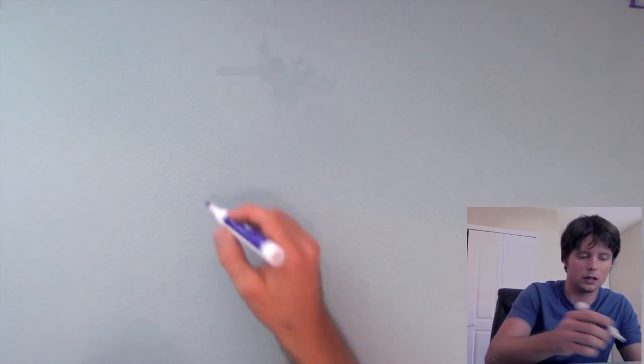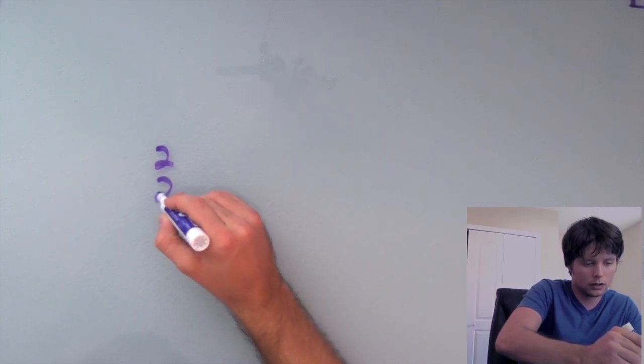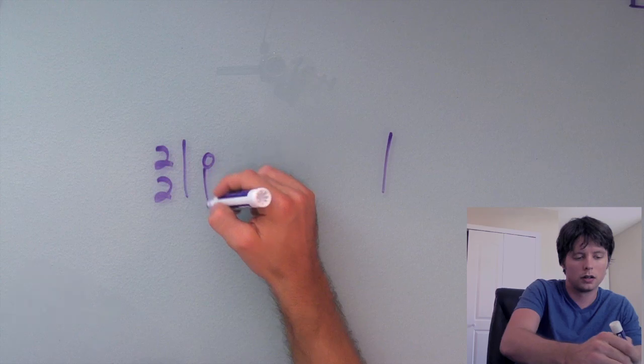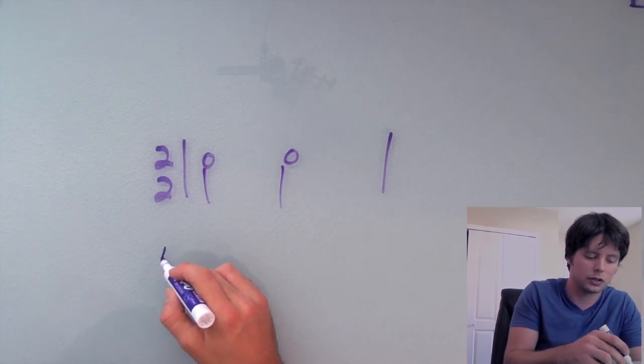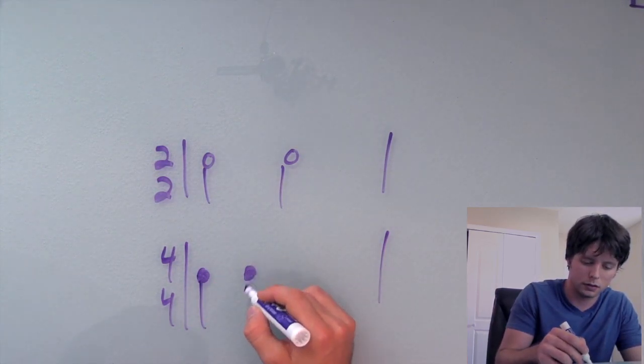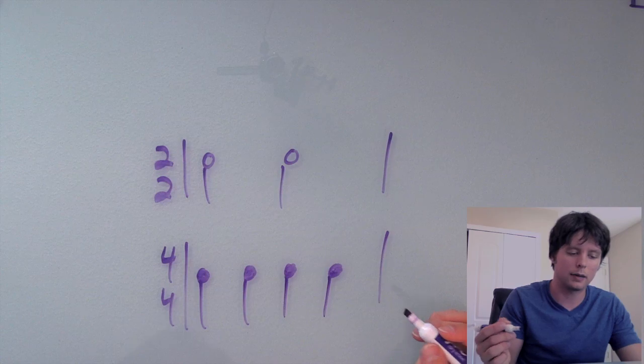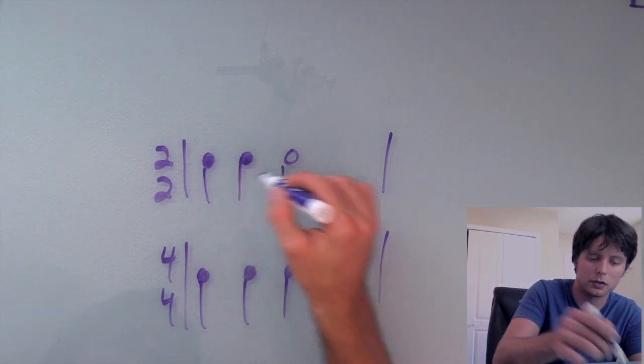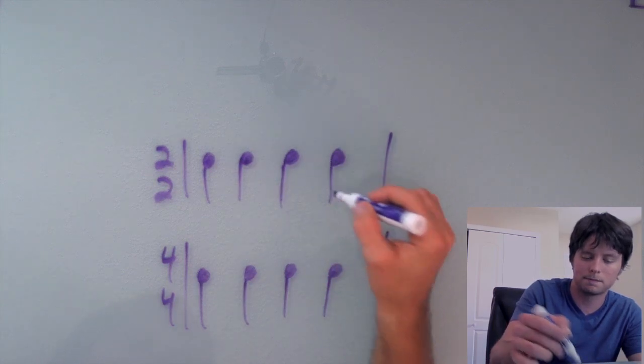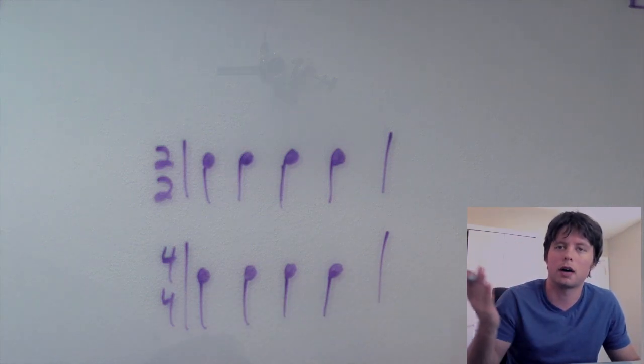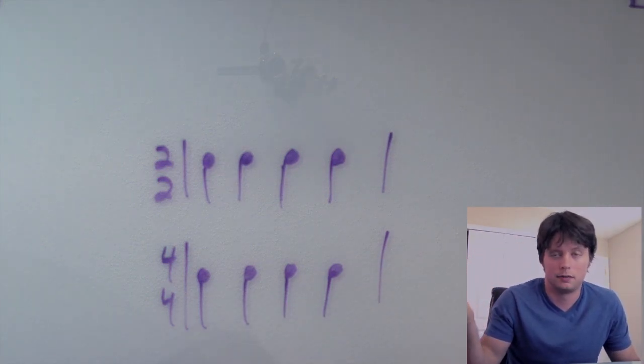Okay, so one more point before I kind of leave this alone. You might notice that a time signature like 2-2, okay, you would have two half notes. Now, a time signature like 4-4, you would have four quarter notes. But we just established that a half note is equivalent to two quarter notes. So you could actually have a measure in 2-2 that looked like this. And if you look at those, they look like they're the same thing. You might wonder why bother having 4-4 and 2-2. They look the same.